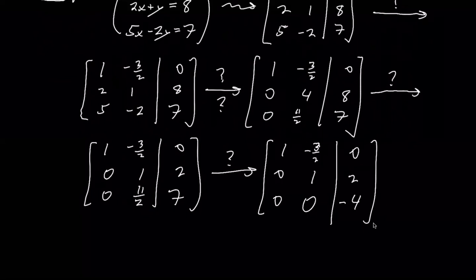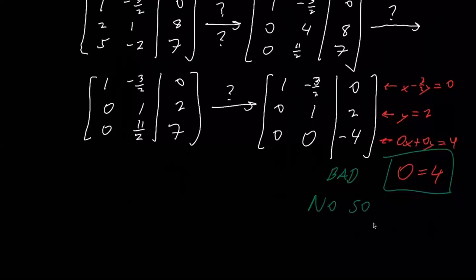So at this point, something strange is happening. This is one reason I wanted to highlight this. If we turn these back into equations, this equation right here is just y = 2. That's fine. This equation is x - 3/2 y = 0. But what about this equation? This says 0x + 0y = 4. Or in other words, zero equals four. I don't know about you, but I don't think zero equals four. So that's bad, right? And it actually shows that this system has no solutions.